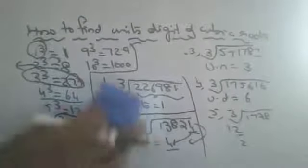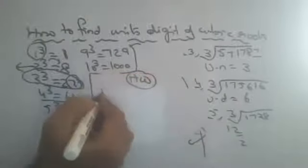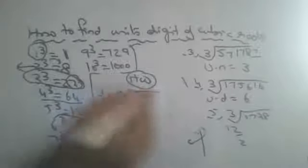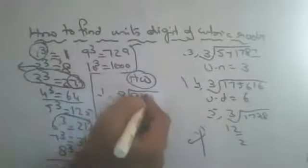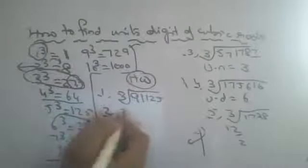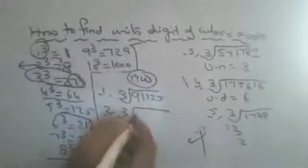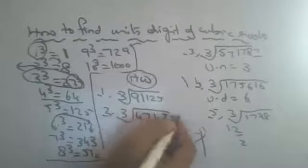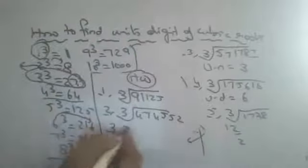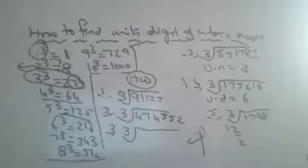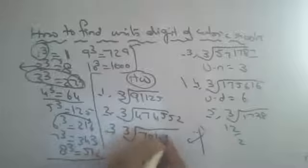Copy down the homework problems. Find the units digit of the cubic root of: 911125; cubic root of 474552; cubic root of 704969.